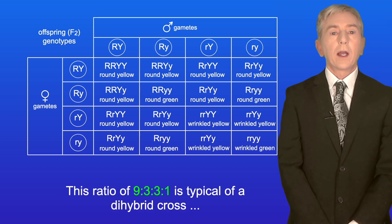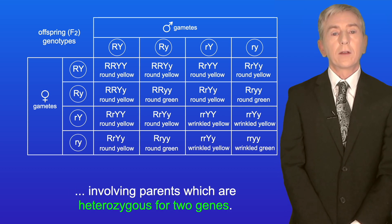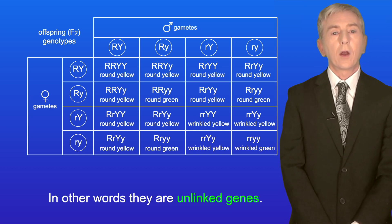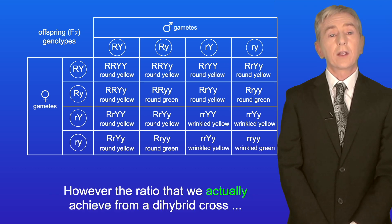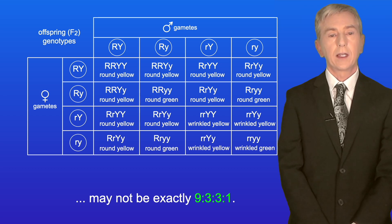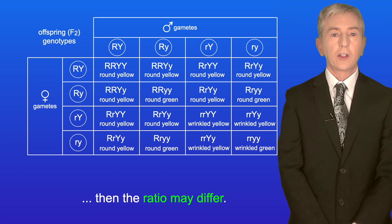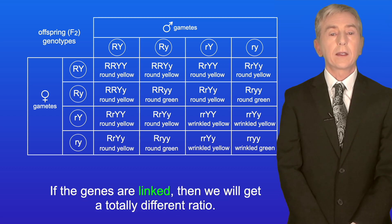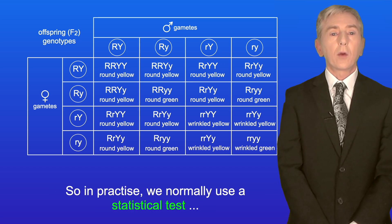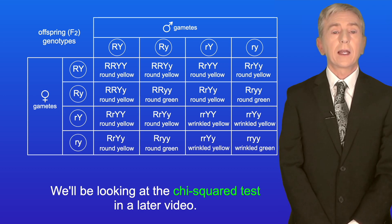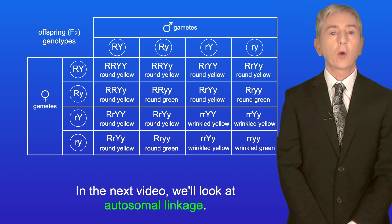This ratio of 9 to 3 to 3 to 1 is typical of a dihybrid cross involving parents which are heterozygous for two genes, as long as those two genes are on different pairs of homologous chromosomes — in other words, unlinked genes. However, the ratio we actually achieve from a dihybrid cross may not be exactly 9:3:3:1. For example, if the number of offspring is small then the ratio may differ, and if the genes are linked then we will get a totally different ratio. In practice we normally use a statistical test to see how close our ratio is to the expected ratio, and we'll be looking at the chi-squared test in a later video. In the next video we look at autosomal linkage.